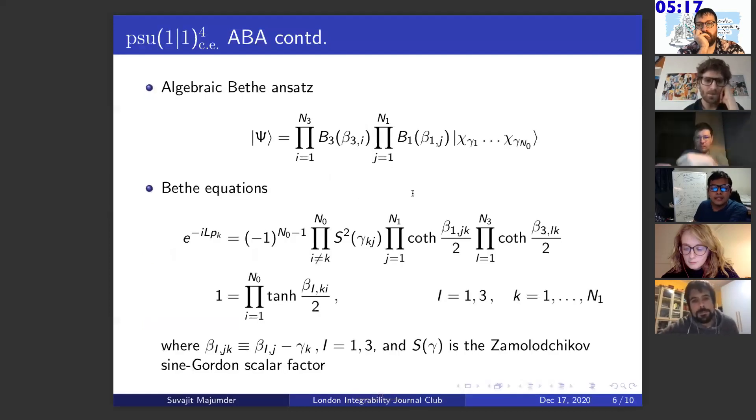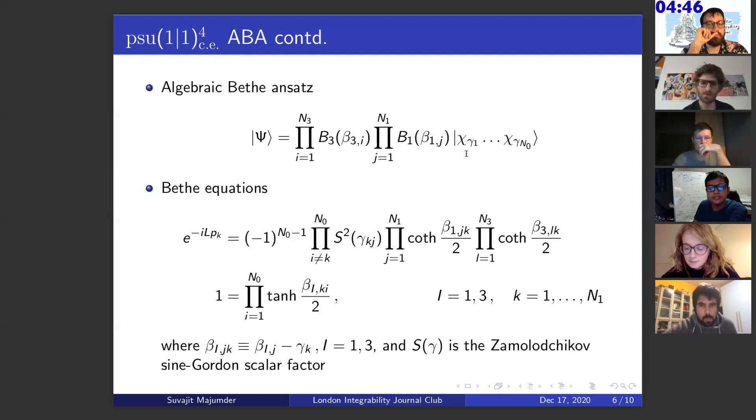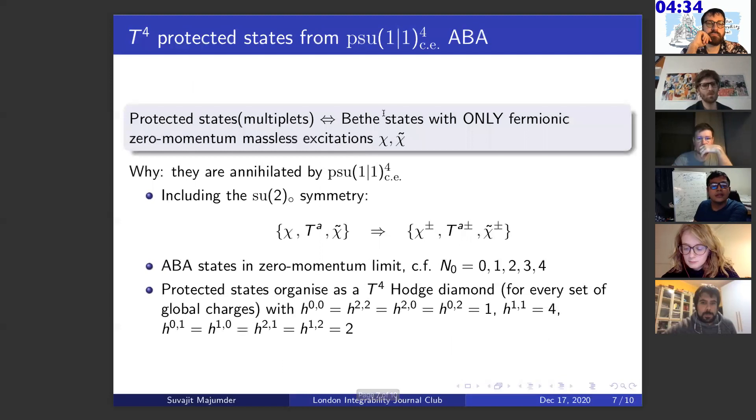This is the Bethe ansatz. We use the B operators that I mentioned previously to generate on top of the pseudo vacuum, which is a bunch of the highest weight state chi, labeled by the impurities at these sites. This is a usual generic state. For it to be an eigenstate, the parameters sitting inside the B operators as well as the impurities need to satisfy certain Bethe equations, which are written down here. This is a momentum carrying Bethe equation, which determines this gamma i's, fixes those. And then there are these auxiliary Bethe equations that fix the auxiliary Bethe roots sitting inside the B operators.